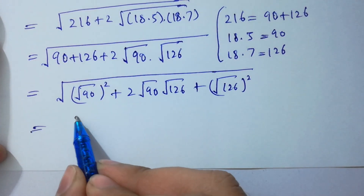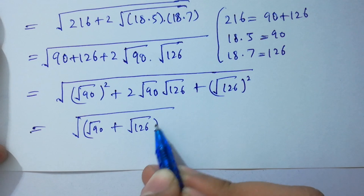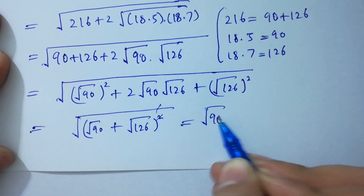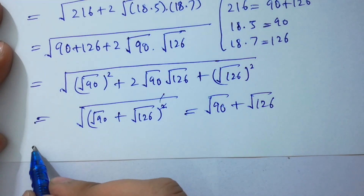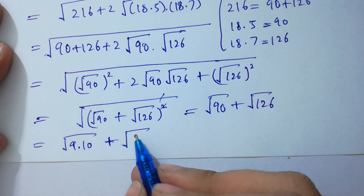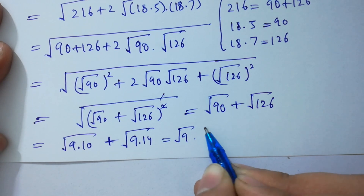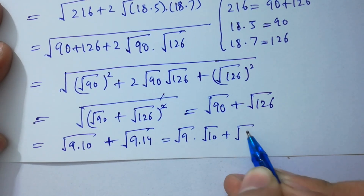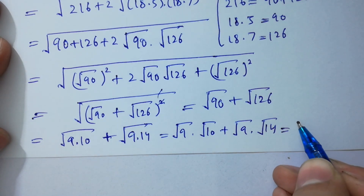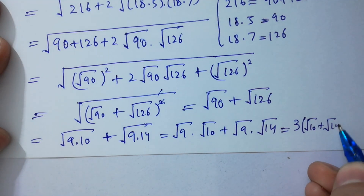It will be (square root of 90 plus square root of 126) whole squared. The square and square root cancel, giving square root of 90 plus square root of 126. Since 90 equals 9 times 10 and 126 equals 9 times 14, we get square root of 9 times square root of 10 plus square root of 9 times square root of 14. Since square root of 9 equals 3, we take 3 as common, giving 3 times (square root of 10 plus square root of 14).